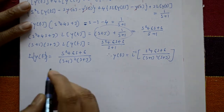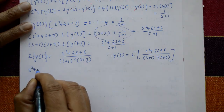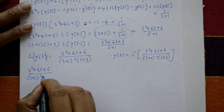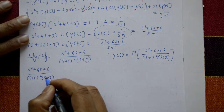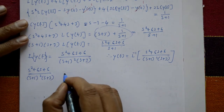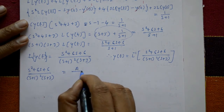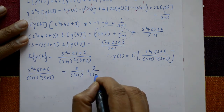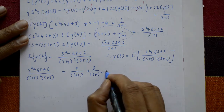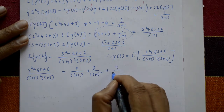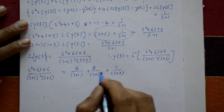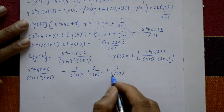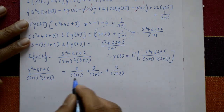Consider s squared plus 6s plus 6 upon s plus 1 whole squared into s plus 3. This is equal to A upon s plus 1 plus B upon s plus 1 whole squared plus C upon s plus 3. Taking LCM and cancelling the common denominator on both sides, we get the numerator equation.